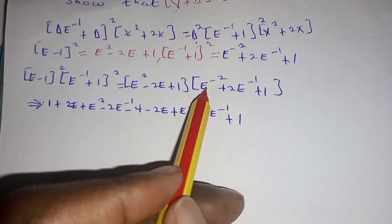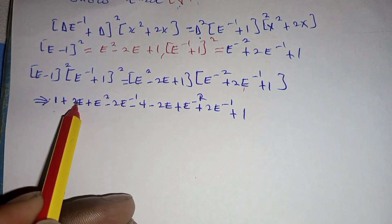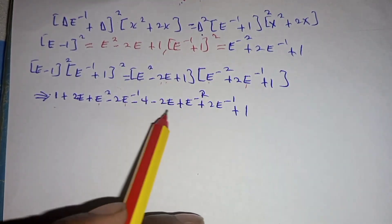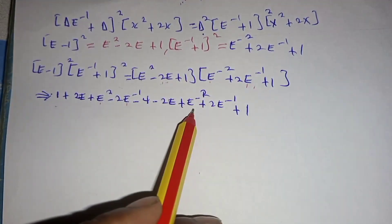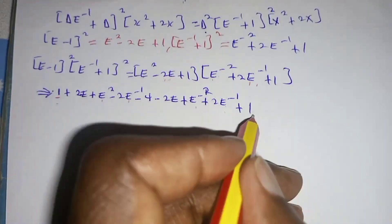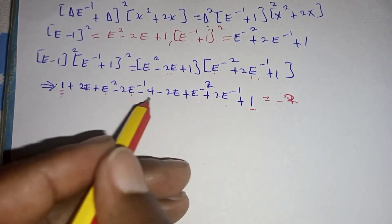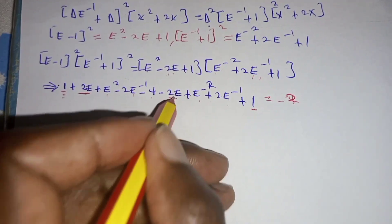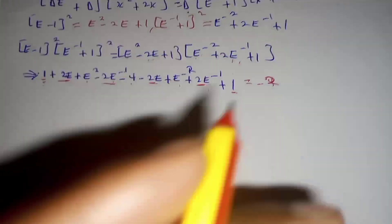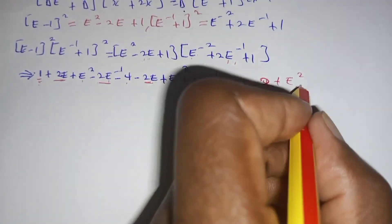This one becomes one. This other part reduces to E power two. This other one we have squared. Then minus two E power negative one, minus four. This and this will be one, minus two E, then plus E squared, plus two E to the next power. We have one here and one giving two, two minus four gives negative two. Two E minus two E cancels, and the negative two power exponent terms also cancel out. Then you are left with E squared minus E power two.